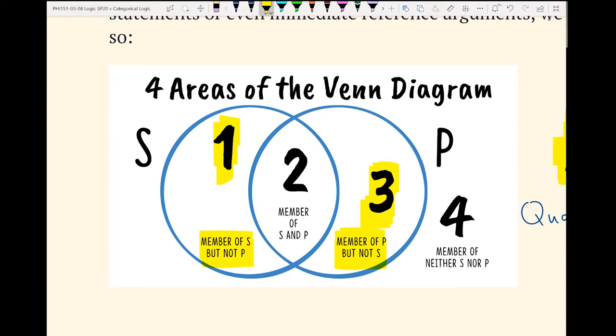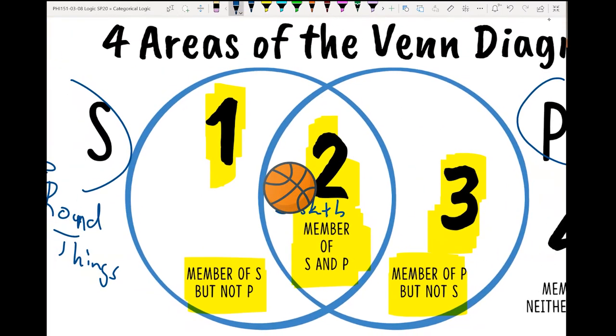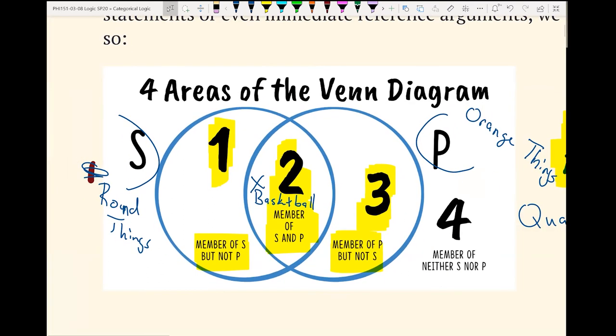And then we have a place we're naming it two, where it's the member of both classes. So if you're thinking about maybe a basketball, a basketball is both a thing that is orange and a thing that is round. So if we put roundness as our subject, round things, and then over here we have orange things, if that's our P and that's our S, well, then here would be a basketball. If you had questions about just what goes on with a categorical statement or these diagrams, that's a quick overview.